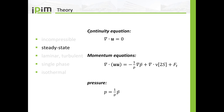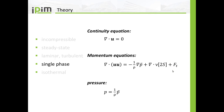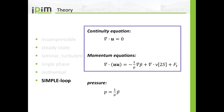Steady state means that we do not have partial time derivatives and we will not have a physical time. Laminar/turbulent means we can solve the equations for the laminar flow and there is also the possibility to have additional terms for turbulence modeling. Single phase means there is no additional treatment or equations for multi-phase modeling. Isothermal means there is no energy equation. The continuity equation and the momentum equations are not solved separately but are rather combined into the SIMPLE loop.